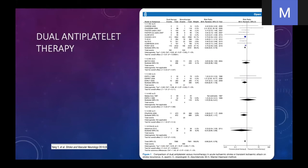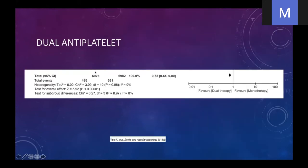Looking at dual antiplatelet therapy — there were a lot of different studies, and most of them crossed the line of statistical significance individually. But when you put all these studies together — almost 14,000 patients — the cumulative effect shows it probably is beneficial to use dual antiplatelet medications in patients with a stroke. But this doesn't have to be started emergently in the emergency room; it can be delayed 24 to 48 hours afterwards. This really prevents further strokes from happening.